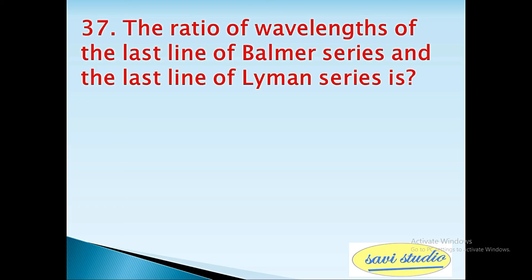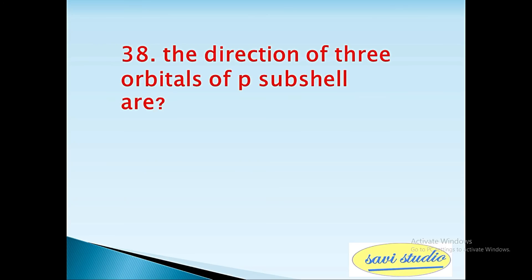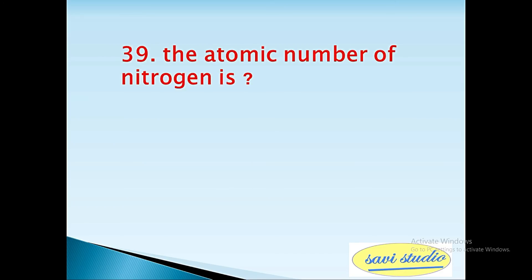37th question: The ratio of wavelengths of the last line of Balmer series and the last line of Lyman series is? Answer: 4 is to 1. 38th question: The direction of three orbitals of p subshell are? Answer: perpendicular. 39th question: The atomic number of nitrogen is? Answer: 7.